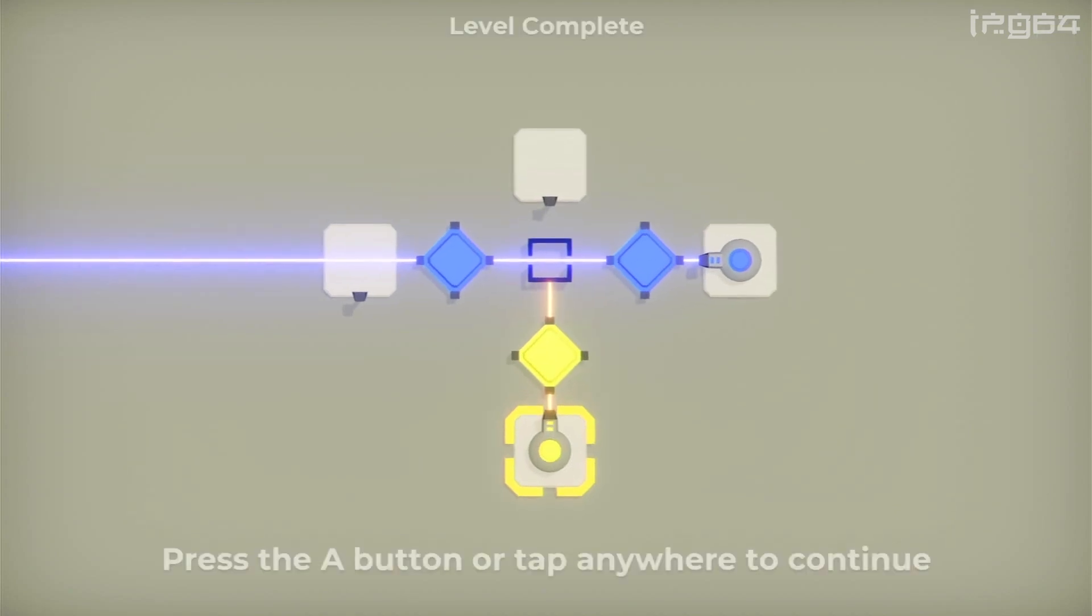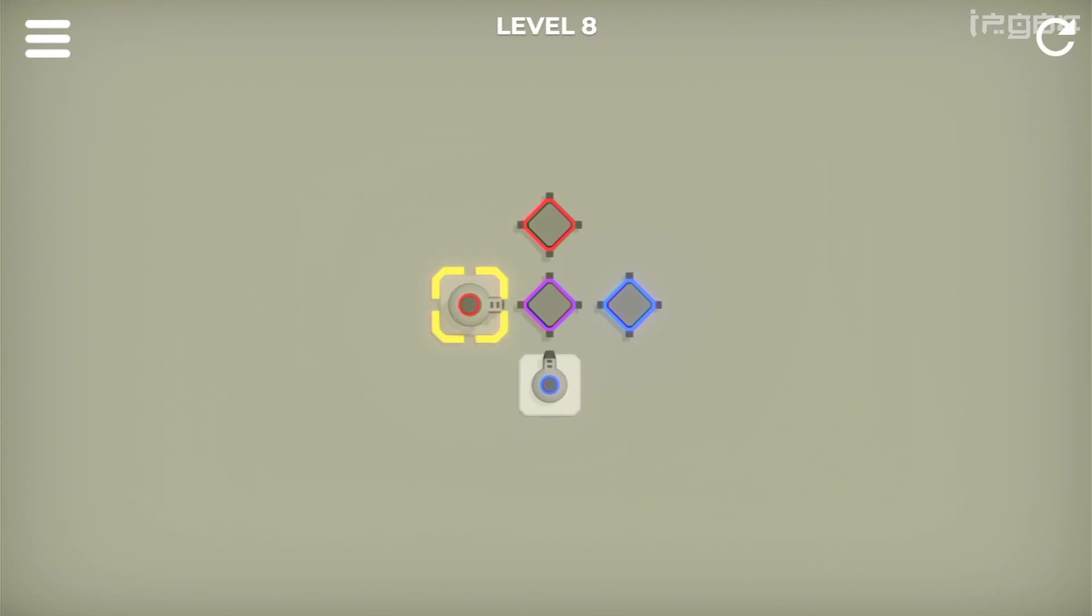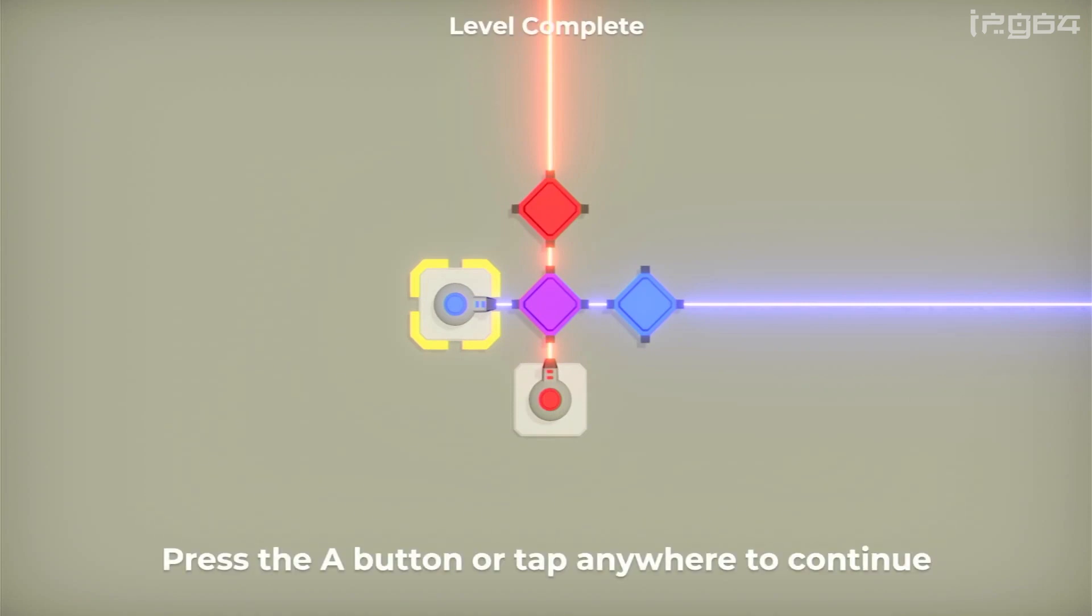But, all in all, the gist of the game is that you're turning little lights on via the lasers to make the grid. So, here's a blending example where you've got to make purple. And off you go.